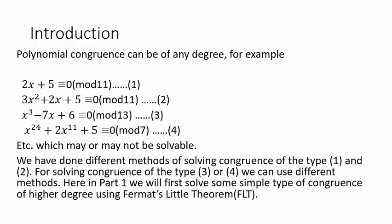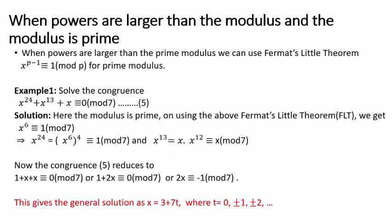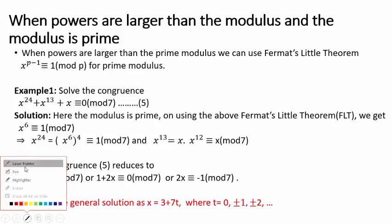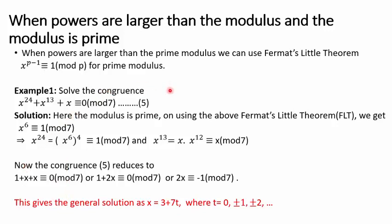Let's move on to higher degree polynomial congruences. The first method we handle here is when the powers are larger than the modulus and the modulus is prime. In such a case, we can use Fermat's Little Theorem, which states that if p is prime, then x^(p−1) ≡ 1 (mod p). Let's start with an example.